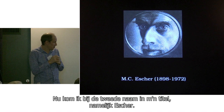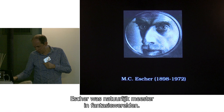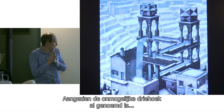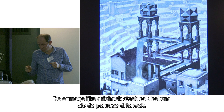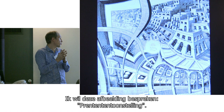Now let me turn to the second name in my title: Escher — master of imagined worlds and illustrator of beautiful mathematics. The impossible triangle, also known as the Penrose triangle, has already been mentioned, but that is not what I want to talk about today. I want to talk about this particular print called Print Gallery.